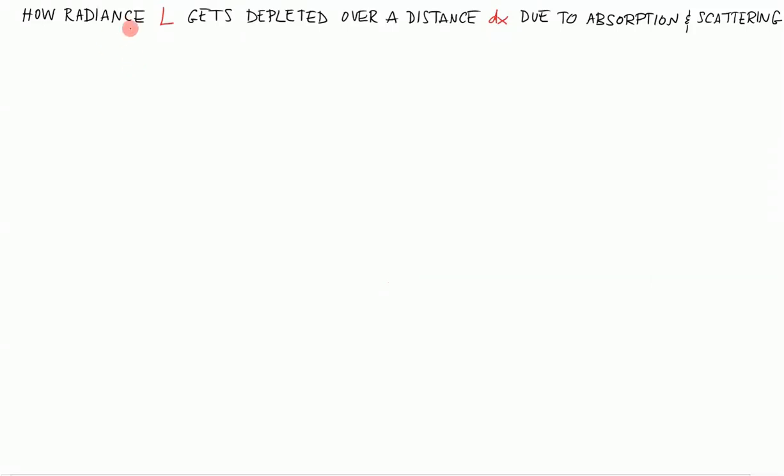There's a language for understanding how a beam gets depleted as it propagates through tissue. In this short tutorial, I'm going to talk about how the radiance L changes as it propagates a short distance dx through tissue. It loses a certain amount of its power per unit area due to both absorption and scattering, as you see here in the title.